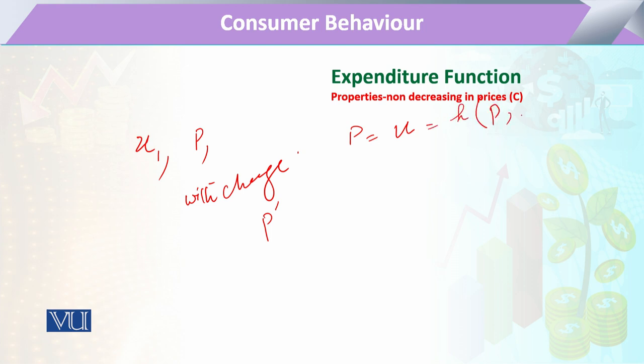Agar doosri yahan pe hum doosre point pe hum uski dekhenge, to that will be equal to p prime when the utility is kept constant. Ab in do points ke darmiyan mein agar hum dekhein, to inke respective expenditure ko hum dekhein. To pehle point pe agar hum kahein ki there is one expenditure function hai hamare paas, jo hai p.